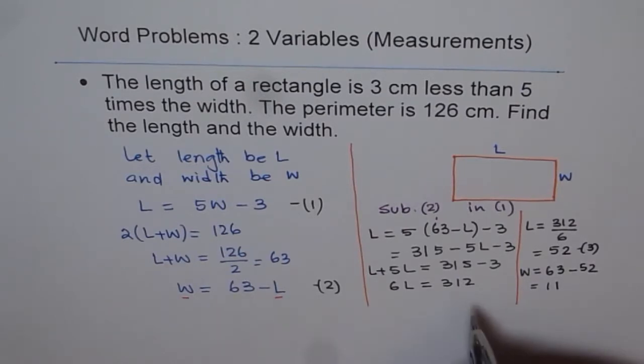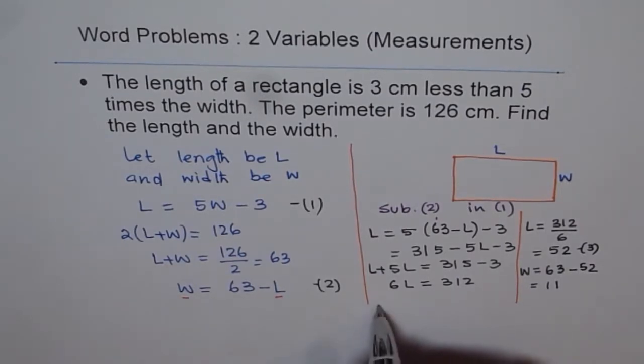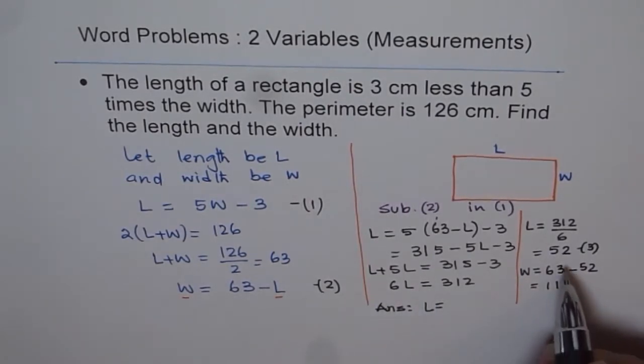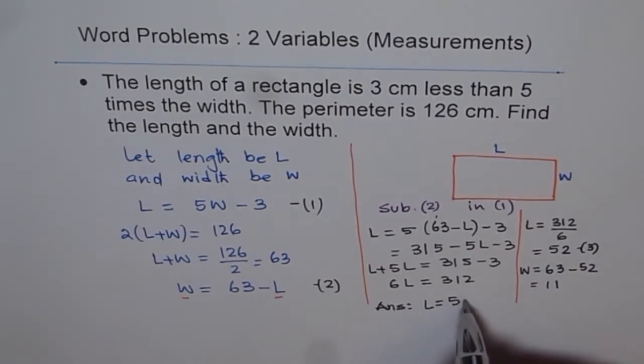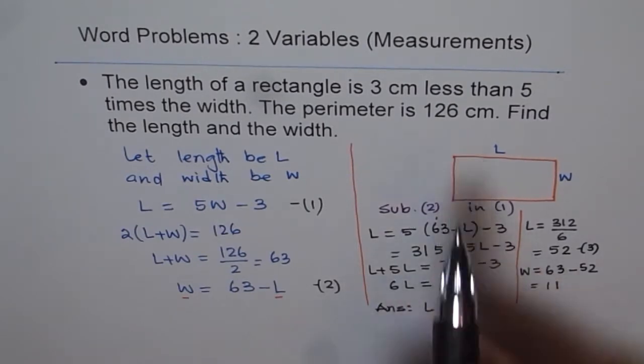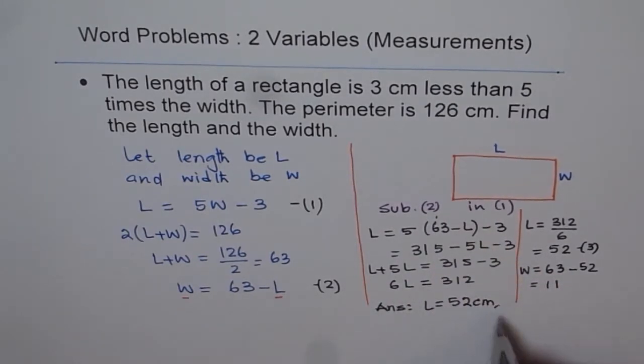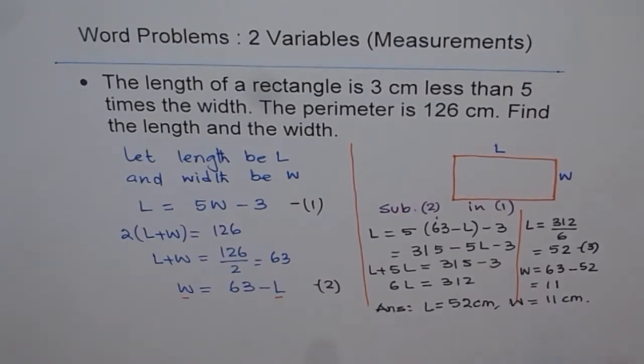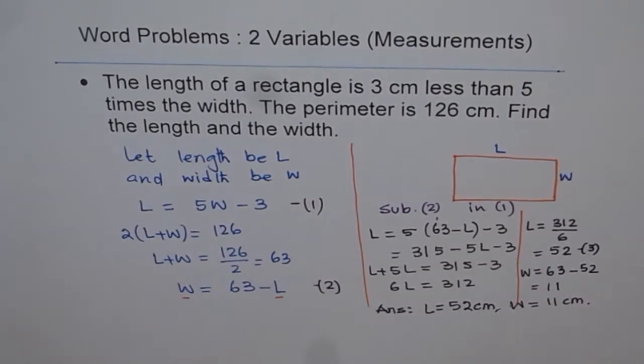Now we can write down the answer. And so our answer is length equals to 52. And don't forget the units, 52 centimeters. And width W equals to 11. So that is our answer for the given question.